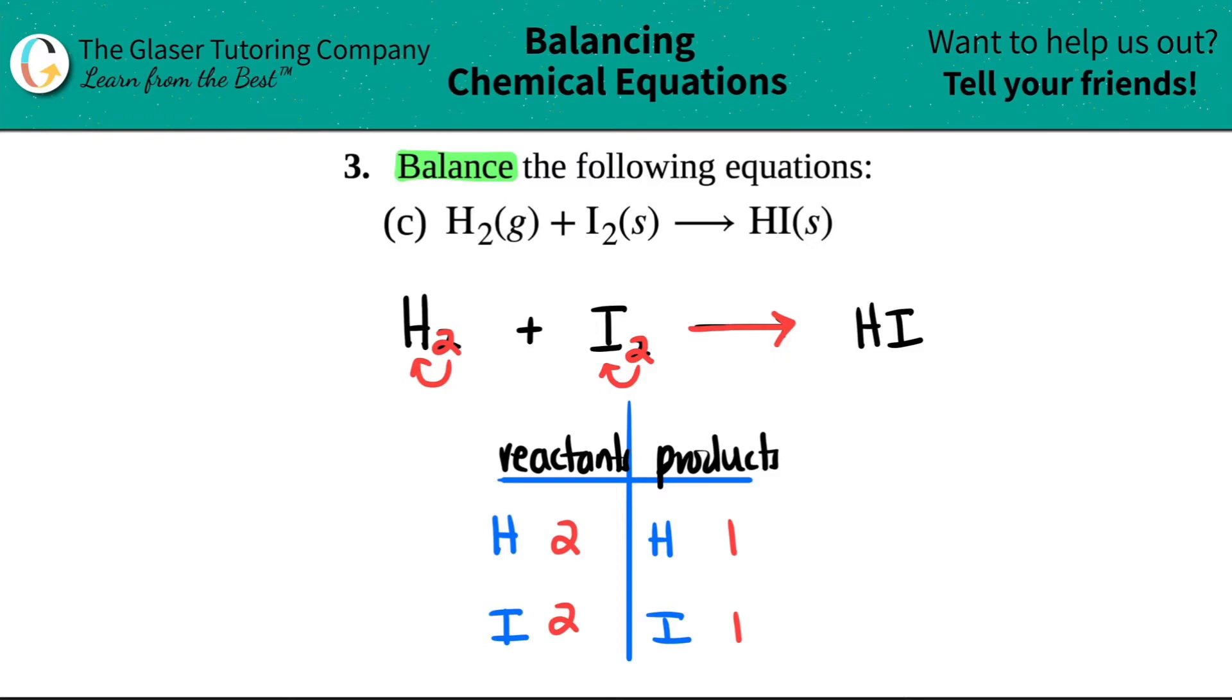We always put coefficients in the front. That's what we can do. We can't put subscripts, we can't put little numbers here. We do it with multiplication. So one times what will get us two? One times two will get us two.